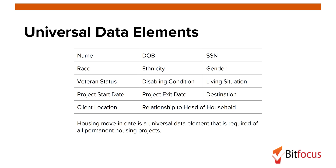Universal data elements include name, date of birth, social security number, race, ethnicity, gender, veteran status, disabling condition, living situation, project start date (previously referred to as project entry date), project exit date, destination, client location, relationship to head of household, and housing move-in date. We will discuss this universal data element later.